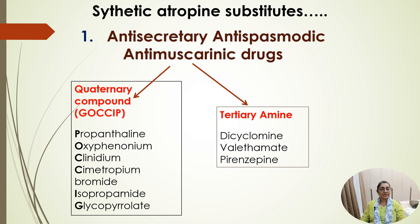Synthetic atropine substitutes for anti-secretory and antispasmodic use include quaternary compounds — propantheline, oxyphenonium, clidinium, symmetropium bromide, isopropamide, and glycopyrrolate — and tertiary amines — dicyclomine, valethamate, and pirenzepine.